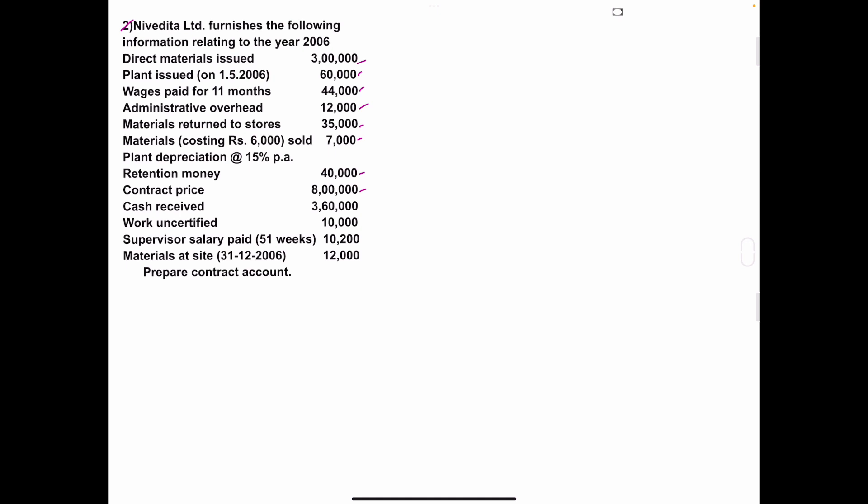Retention money: 40,000. Contract price: 8,00,000. Cash received: 3,60,000. Work uncertified: 10,000. Supervisor salary paid for 51 weeks, amount is 10,200. Materials at site on 31st December 2006: 12,000. Prepare the contract account.